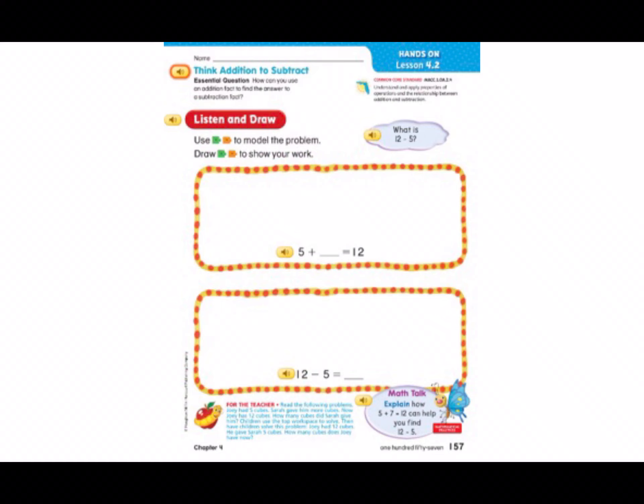So, in the top box, we are going to draw our addition. I know that I have 5 cubes. Now, I need to count on until I get to 12. So, the first number I'm going to start with is 6. 6, 7, 8, 9, 10, 11, 12.